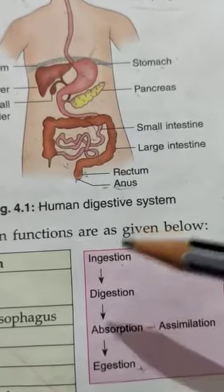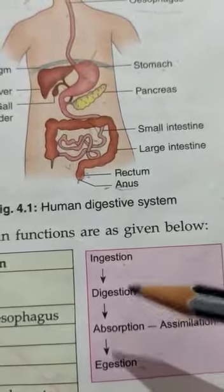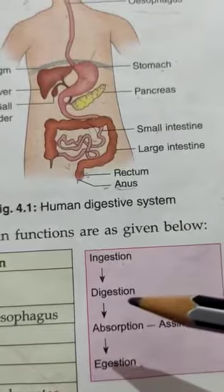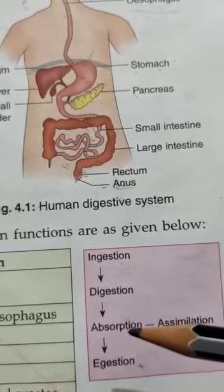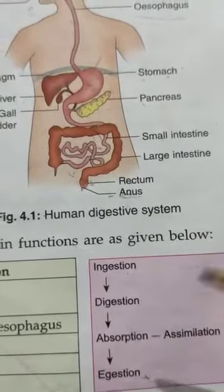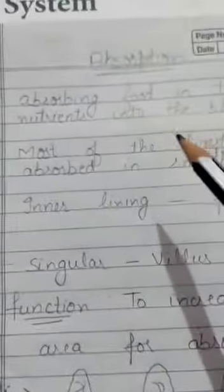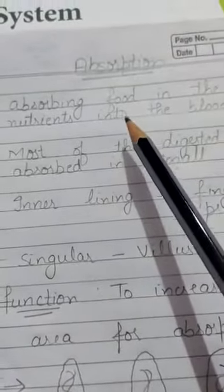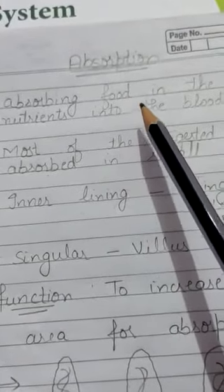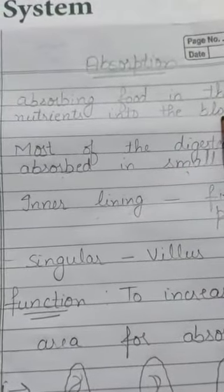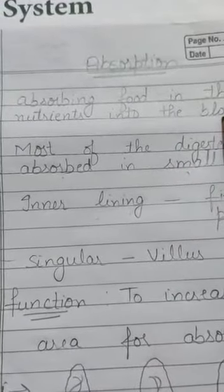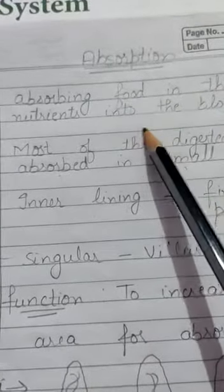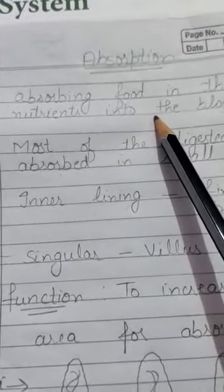We have already learned ingestion and digestion. Now we are going to start absorption. Absorption is the process in which food is absorbed — the nutrients go into the bloodstream, meaning food is properly absorbed into the bloodstream.